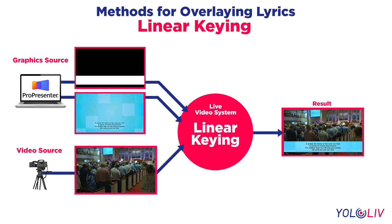The third method that broadcast systems use is linear keying. While this method is the most flexible in the content you can overlay, it's also the most complex because it requires the use of two video signals called key and fill. The key contains a black and white map that tells the video system what is to be shown and what is to be transparent from the fill signal, which actually contains the content that is overlaid.